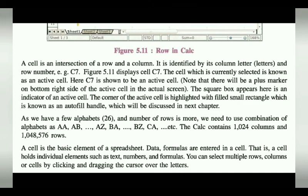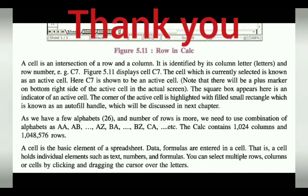Each cell can hold text, numbers, and formulas. You can select multiple rows, columns, or cells by clicking and dragging the cursor. To select a range: click the starting cell, hold the left mouse button, and drag to the last position — the whole area will be selected. This concludes the introduction about rows, columns, and cells in Calc. The rest of the topics will be discussed in our next session.